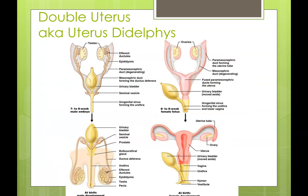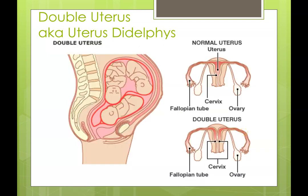Rarely, a woman can have a double uterus. Instead of developing as one large uterus, there can be almost a partition in the middle, allowing a baby to implant on one side and another baby to implant on the other side, illustrating two different compartments or uteri for babies to implant and grow.